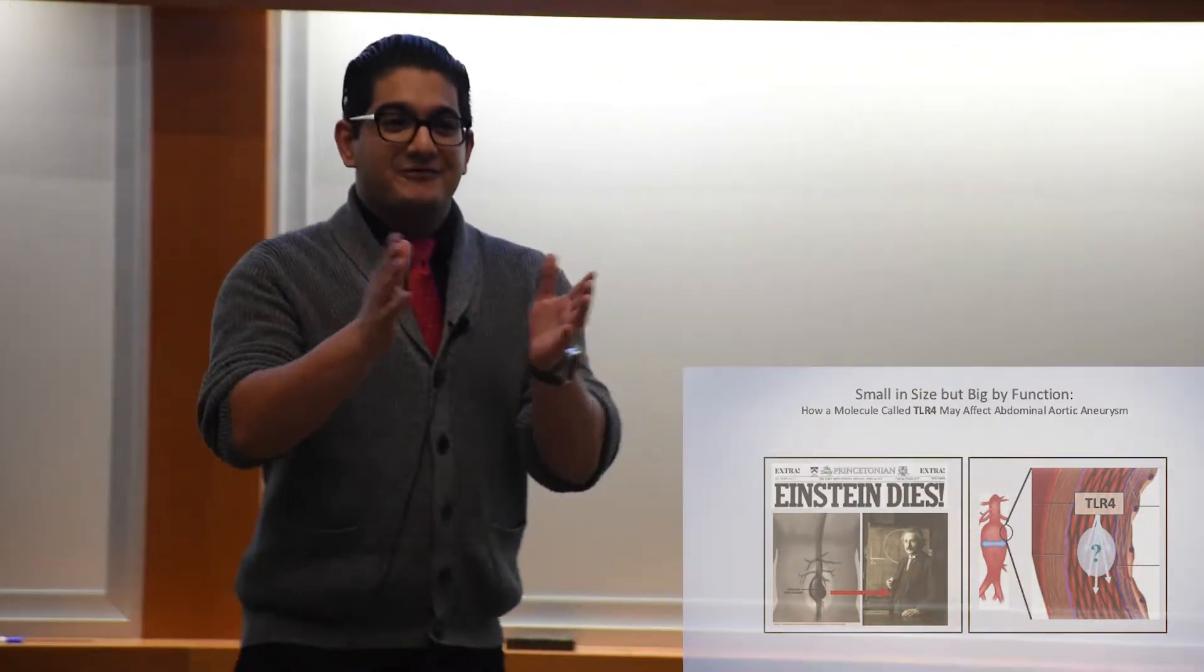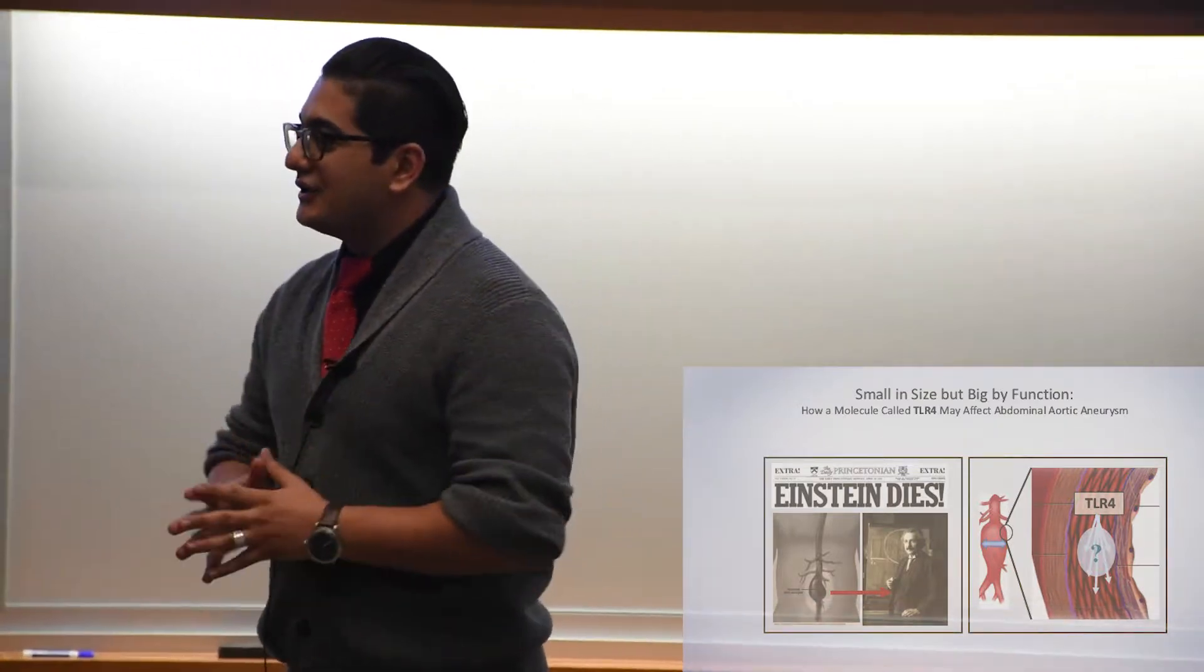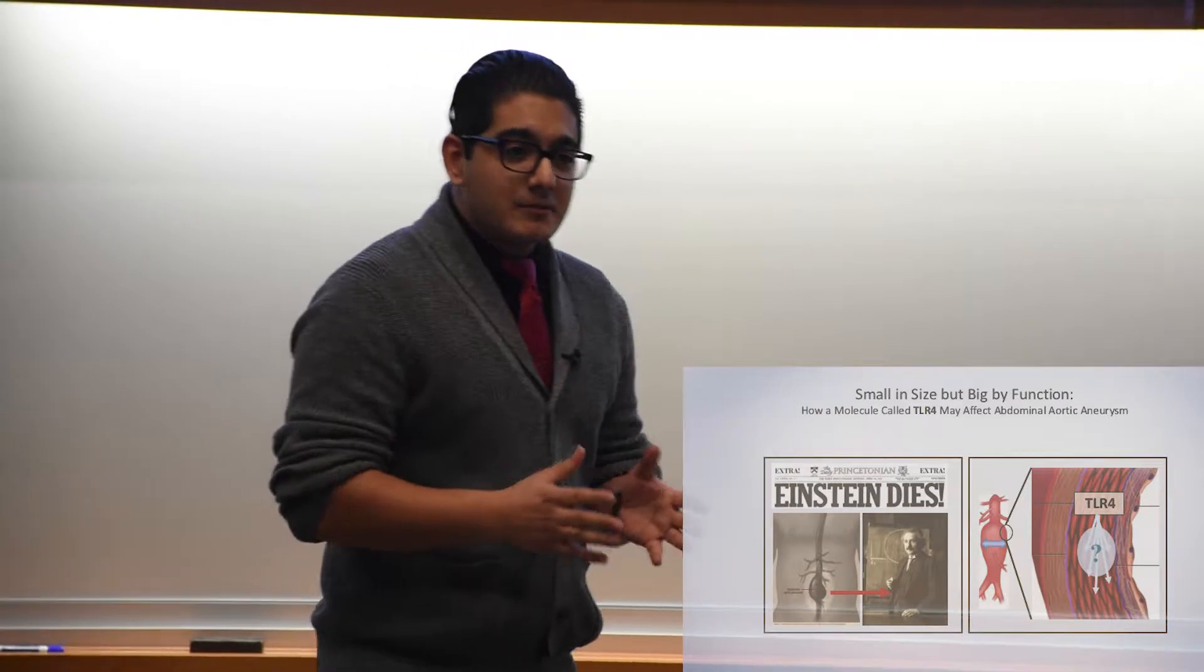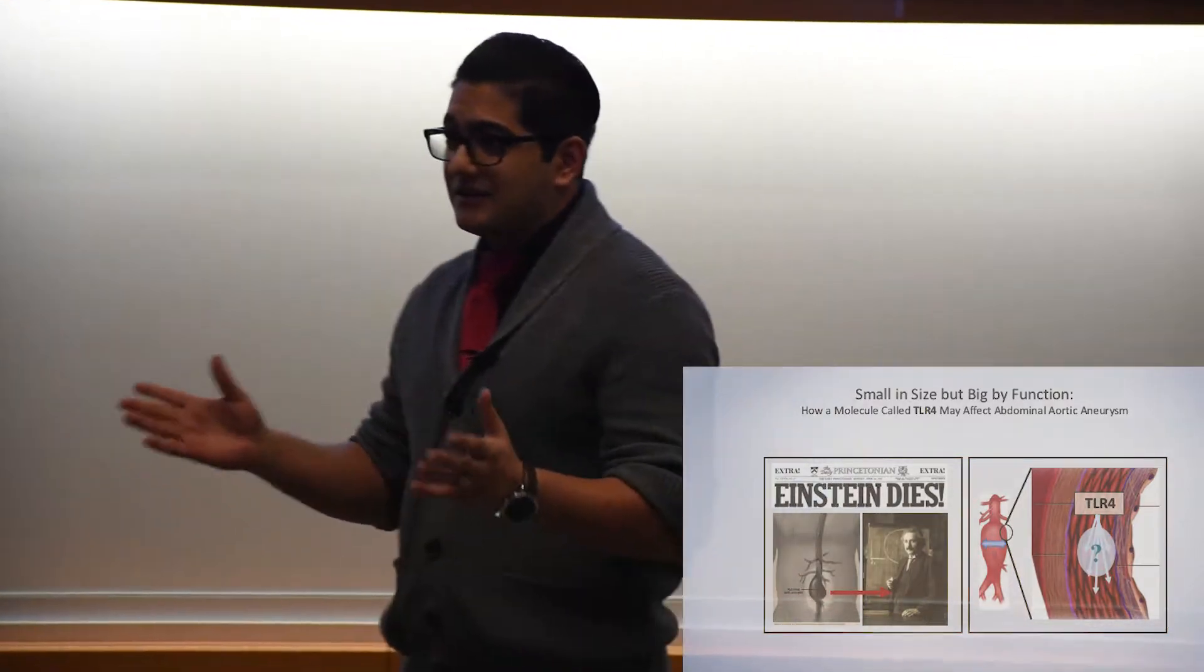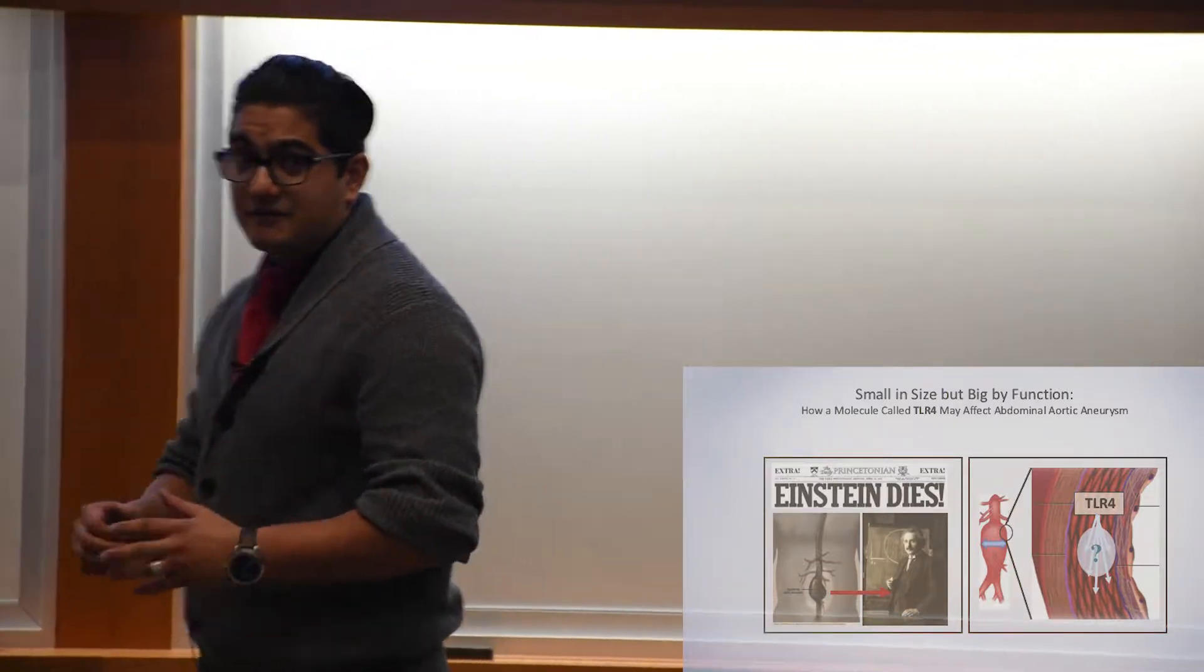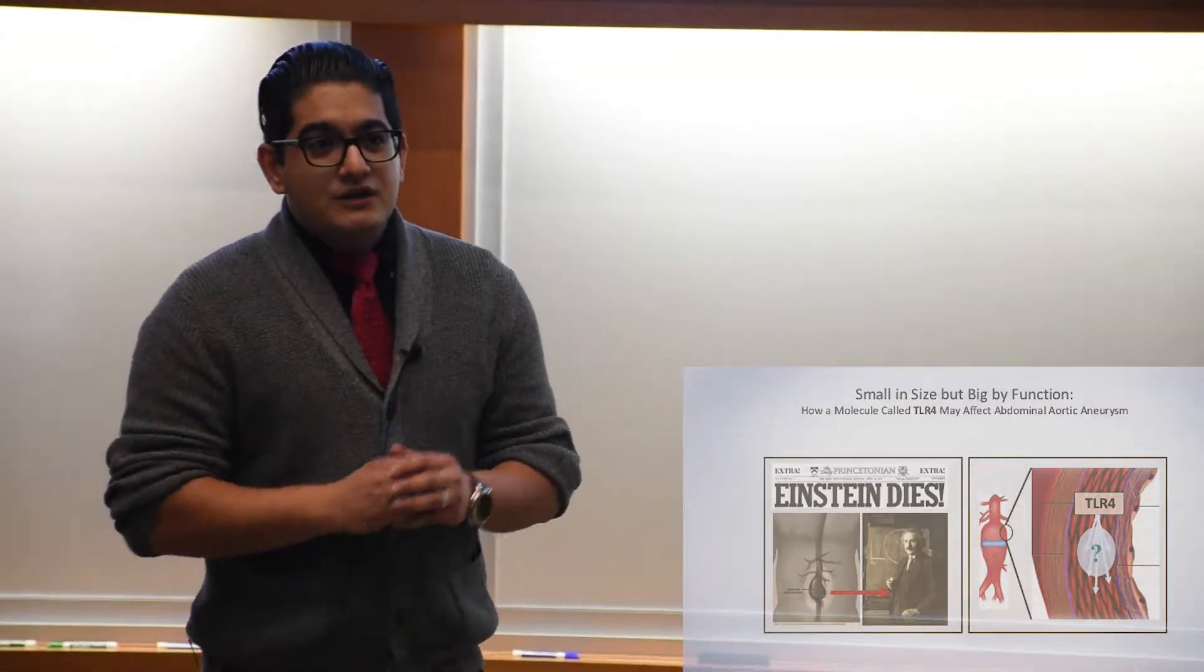Okay. So, for your information, Einstein died of a condition called abdominal aortic aneurysm. And as a molecular biologist, I'm more interested in how he died rather than how he figured out a bunch of theories in physics, no offense to my friends from the physics department, of course.